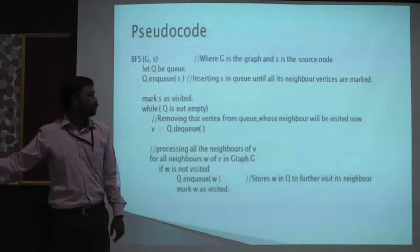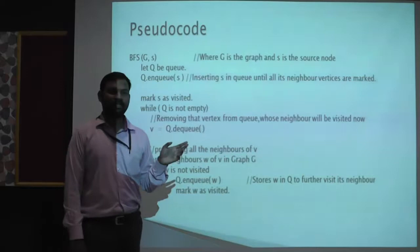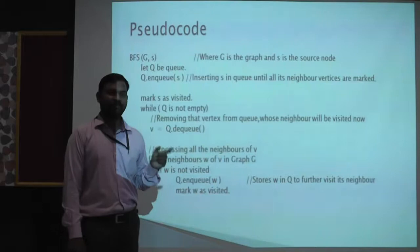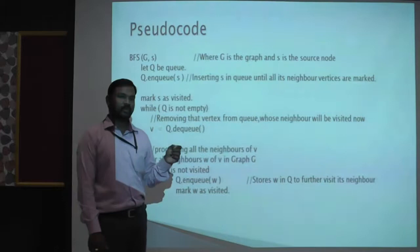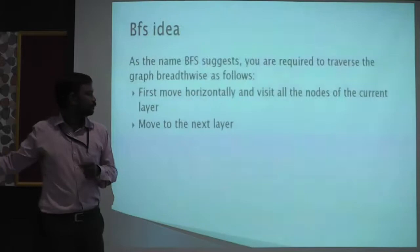Let's see an example of breadth-first search. In contrast with depth-first search, breadth-first search uses a queue data structure because queue uses a logic called first-in, first-out. So whichever node enters first, all the child nodes of the current node will be processed, then it proceeds to the next node. But in depth-first search, whichever node enters last, its children will be processed first.